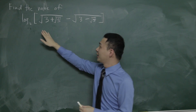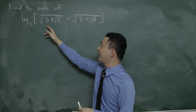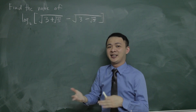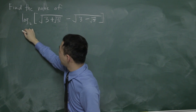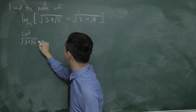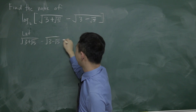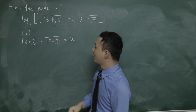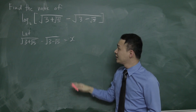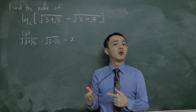Substitution means: I will let the whole inner expression — everything except the log base 2 — equal to x, or any letter you like. So I will let √(3+√5) − √(3−√5) = x. The reason I do this is because after I let the whole thing equal to x, I have an equation.